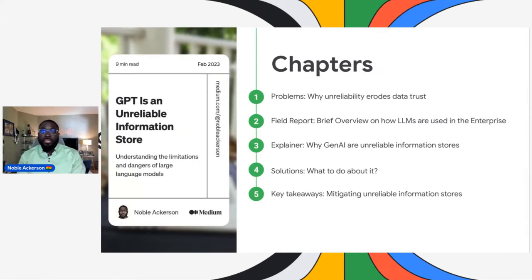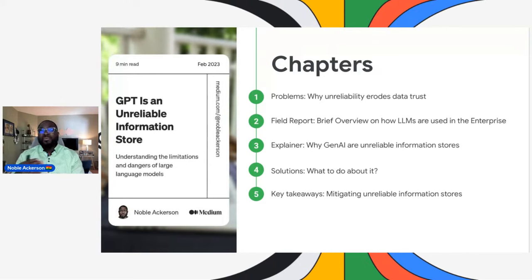In about 30 minutes, you'll be taking away why unreliability of generative AI systems erodes trust in the systems we build. It's an opinionated take. From an enterprise context, I want to show how these systems are used — a field report of some sort. I'll use examples to share why these systems behave the way they do, why they're unreliable information sources, and what is being done about that. I'll leave key takeaways and links at the end.